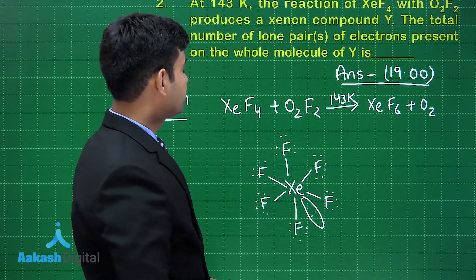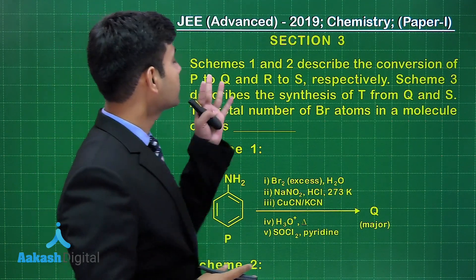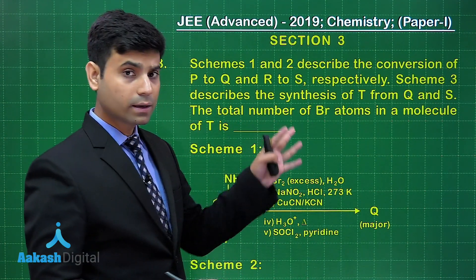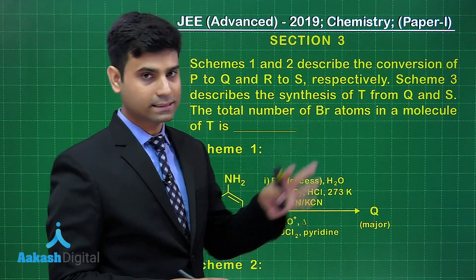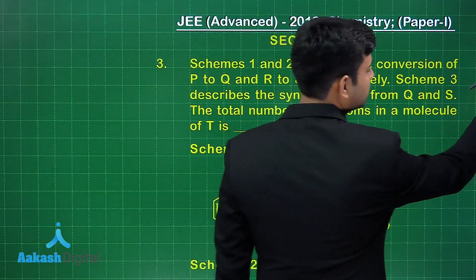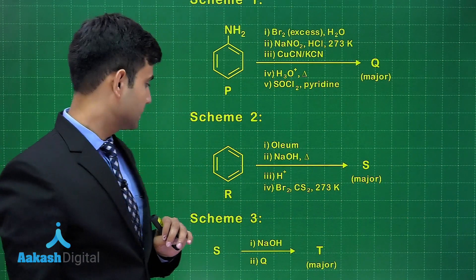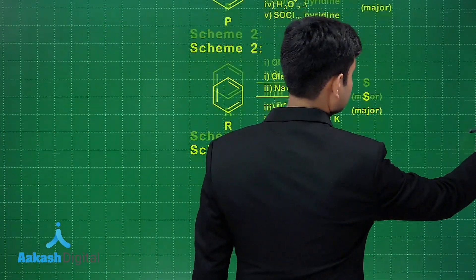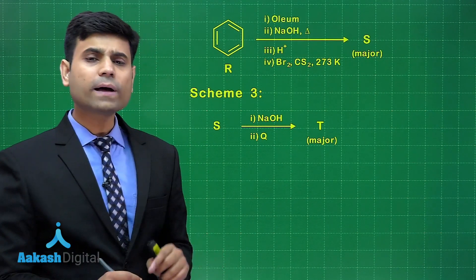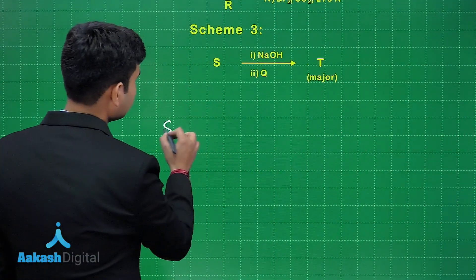Now let's move to the next question, where Scheme 1 and Scheme 2 describe the conversion of P to Q and R to S respectively, and Scheme 3 describes the synthesis of T from Q and S. The total number of bromine atoms in a molecule of T is to be found. Scheme 1 has a number of reactions, Scheme 2 also has a number of reactions, and in Scheme 3, S reacts with NaOH and then Q to give T. Let's write the reactions of Scheme 1.